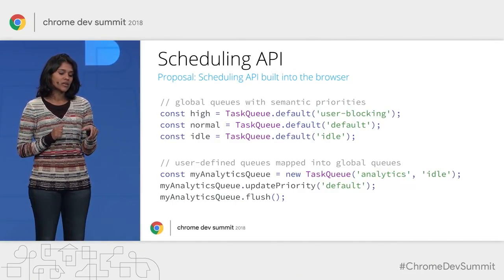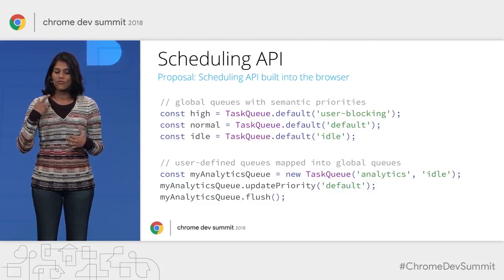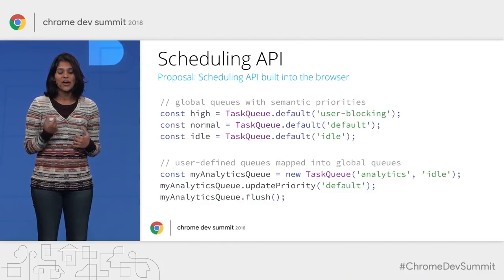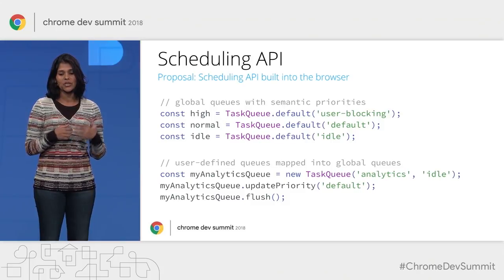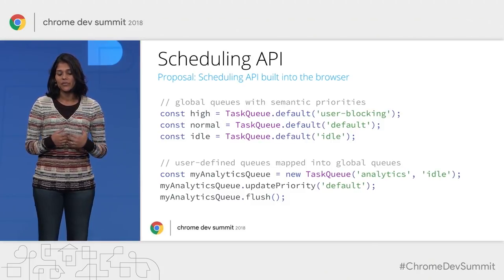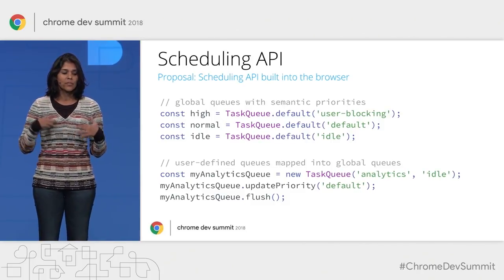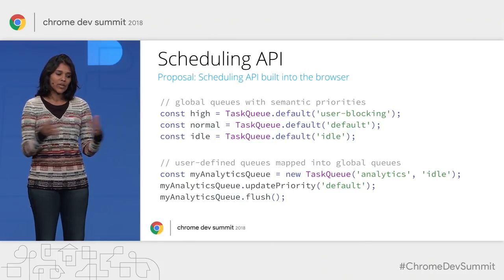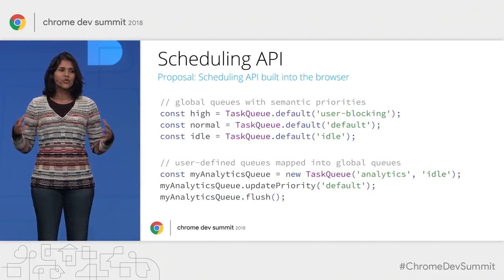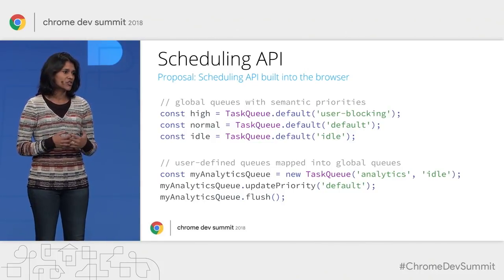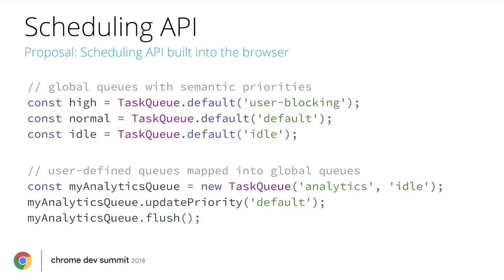The second thing is we think it would be useful to have a notion of user-defined task queues, or virtual task queues. This would give developers more control over managing a group of tasks and doing bulk operations, like updating priority, canceling all the tasks, or flushing the task queues if the app is going away.